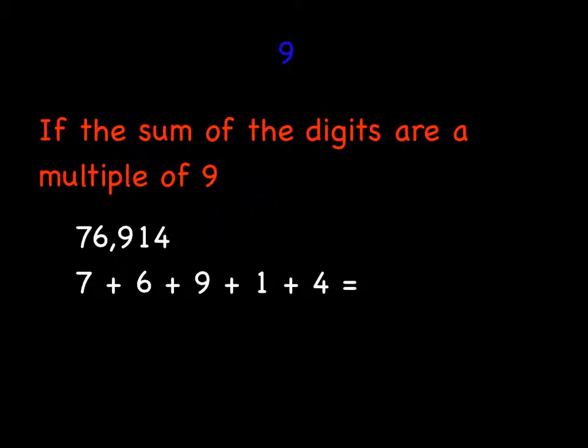For nine, it's pretty much the same rule of three, but we're going to replace three with nine. If the sum of your digits of any number add up to nine, then nine is a factor of that number. So in this big number, 76,914, let's find some easy tens again. Nine plus one is ten, six plus four is 10, 10 plus 10 is 20, and 20 plus seven is 27. So 76,914 has nine as one of its factors because 27 is a multiple of nine.